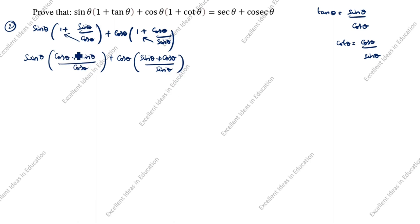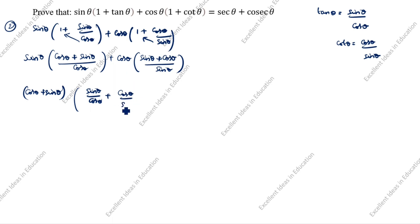We cross-multiply: sin θ open bracket (cos θ + sin θ) divided by cos θ, plus cos θ open bracket (sin θ + cos θ) divided by sin θ. Now you see — cos θ + sin θ and sin θ + cos θ are the same. So we will take (cos θ + sin θ) outside. Remaining inside: sin θ by cos θ plus cos θ by sin θ.